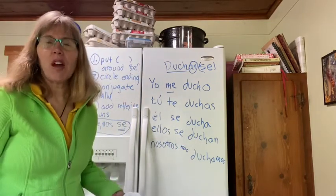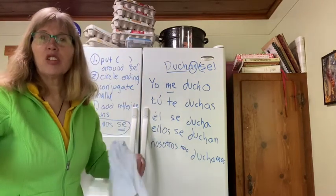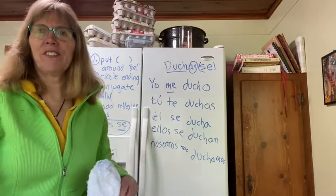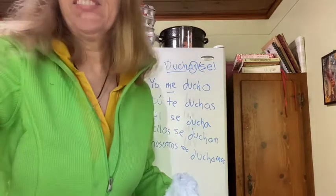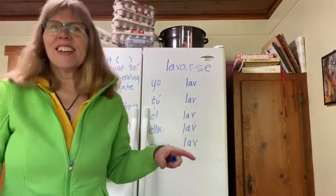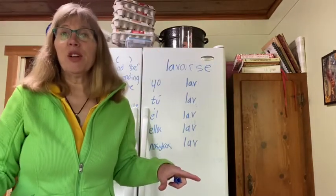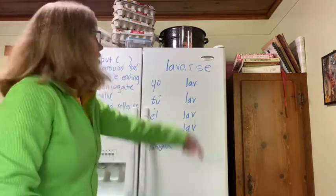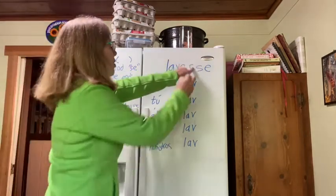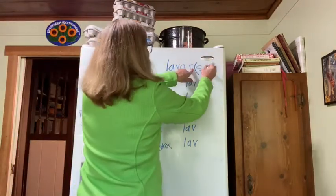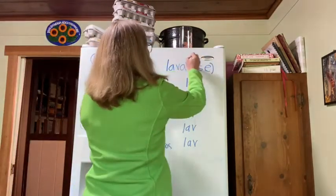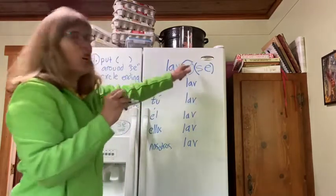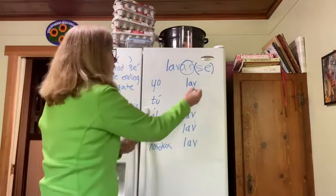I hope you got that one right. I'm going to show you lavarse now. This time I'm going to go a little faster. You follow the four steps: parentheses around the 'se', circle the ending, conjugate normally.